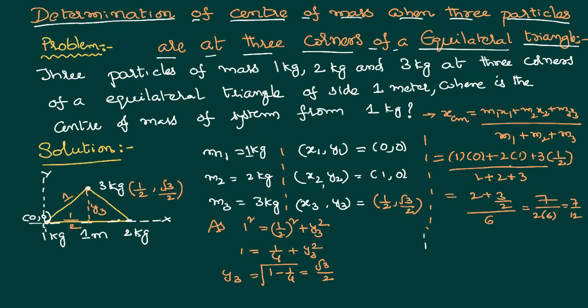Similarly we can also calculate the y_cm by substituting in the formula. Y_cm is M1 y1 plus M2 y2 plus M3 y3 by M1 plus M2 plus M3. As per the standard definition of y_cm, M1 y1 is 0 because it is at the origin, M2 y2 is also 0 because the second body is on the x axis itself. M3 y3 is 3 into root 3 by 2.